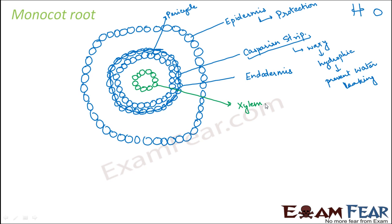Xylem is made up of tube-like structures such as tracheids and vessels. Since we are looking at the cross-section, we only see the top view of those tubes, so they appear as round structures. The central region, the core, is known as pith.